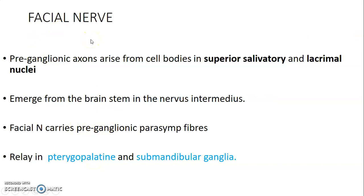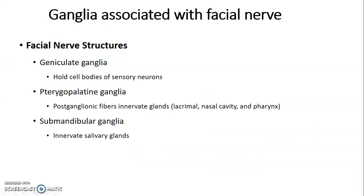The facial nerve is another cranial nerve with a parasympathetic component. The nuclei involved are the superior salivatory nucleus and the lacrimal nucleus. From these nuclei, the nervus intermedius portion of the facial nerve carries preganglionic fibers that emerge from the brainstem and relay into two ganglia: the pterygopalatine ganglion and the submandibular ganglion. Some fibers also relay into the geniculate ganglion, which contains sensory neurons.